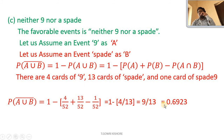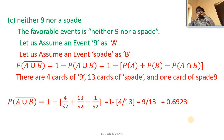That equals 0.6923. In this section we have learned how to solve probability for basic experiments. Thank you.